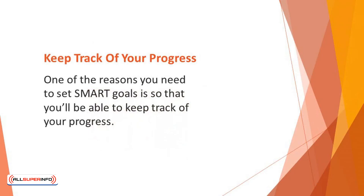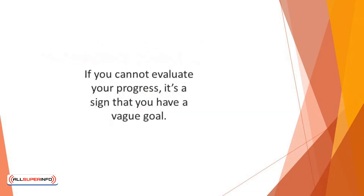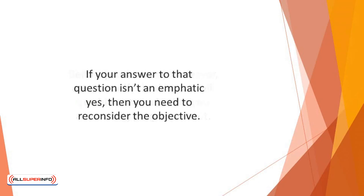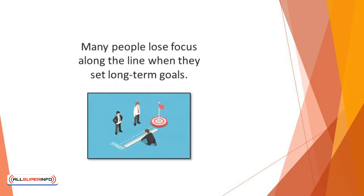Keep track of your progress. One of the reasons you need to set SMART goals is so that you'll be able to keep track of your progress. You should be able to tell whether you are improving or not. If you cannot evaluate your progress, it's a sign that you have a vague goal. Where were you? Where are you now? You should be able to answer these questions without sounding confused. Before you start any endeavor, ask yourself whether you will be able to tell whether you are making progress or not. If your answer to that question isn't an emphatic yes, then you need to reconsider the objective. Being able to keep track of your progress is essential, especially when you have long-term targets. Many people lose focus along the line when they set long-term goals. Therefore, it's vital that you have milestones that depict progress to evaluate how well you are doing.